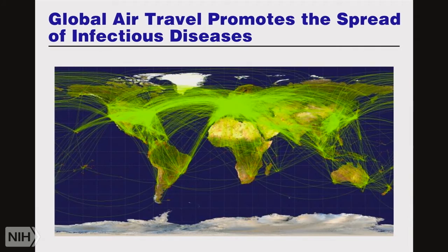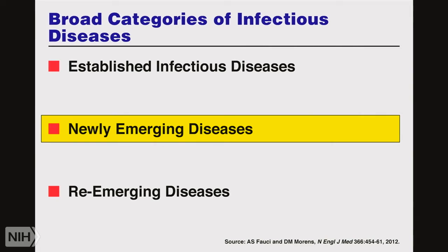Air travel is important here. This schematic shows every green line as a flight that took off today throughout the world. If you look at the connectivity between different countries, there is no place in the world more than 19 hours away — a direct flight to China or Japan is about 18 to 19 hours. That's quite different from many decades ago. Let's look at some new emerging infections.